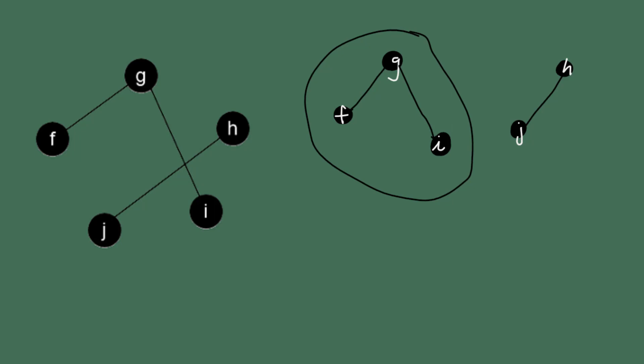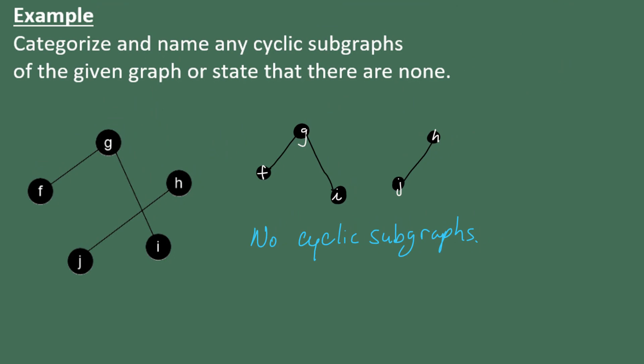This side definitely doesn't have any cycles because there's no way to start at one vertex and end up back at the same vertex without crossing through a vertex twice. And the same goes for this piece over here. So I can state that there are no cyclic subgraphs.